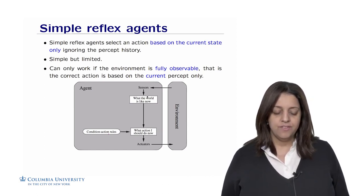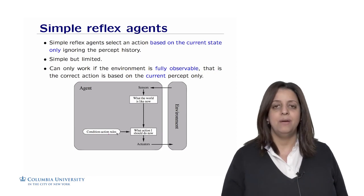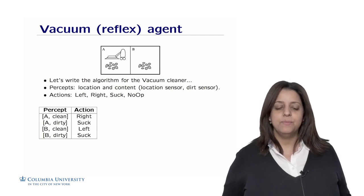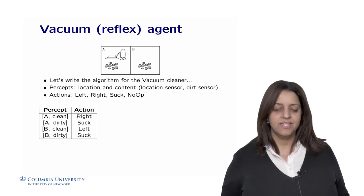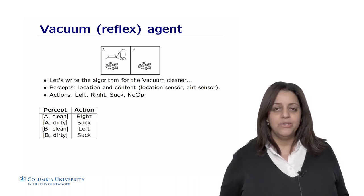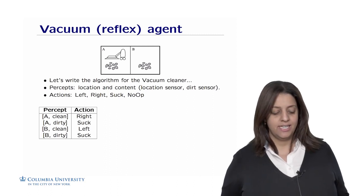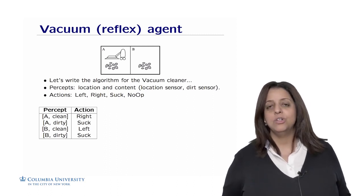To illustrate the concept of a simple reflex agent, let's take the example of the simple vacuum world with two rooms, A and B, where the vacuum needs to figure out what to do. The percepts are the location and the content detected by the location sensor and the dirt sensor. The actions are going left, right, suck, or do nothing.